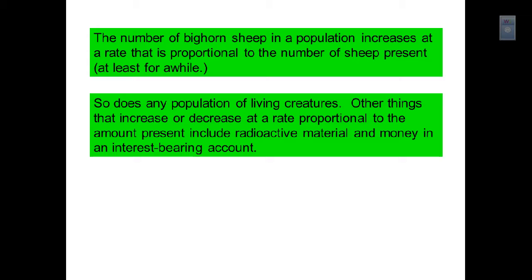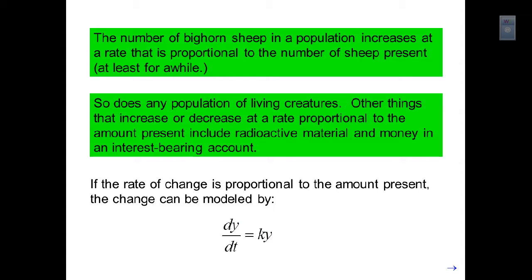The same thing is true for any population of living creatures. Other things that increase or decrease at a rate proportional to the amount present include radioactive material and money in an interest-bearing account. If the rate of change is proportional to the amount present, the change can be modeled by the expression dy/dt equals k times y. The dy/dt is the change in y with respect to time, so the change in y equals some constant k times the amount you currently have.